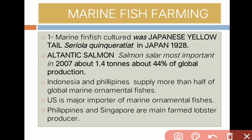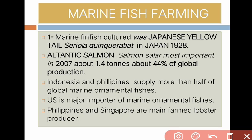Next is marine fish farming. The first marine fish cultured was Japanese yellowtail Seriola in Japan in 1928. Atlantic salmon, Salmo salar, is most important - in 2007 about 1.4 million tons, representing about 44% of global production. Indonesia and Philippines supply more than half of global marine ornamental fishes. The US is a major importer of marine ornamental fishes. Philippines and Singapore are the main farmed lobster producers.